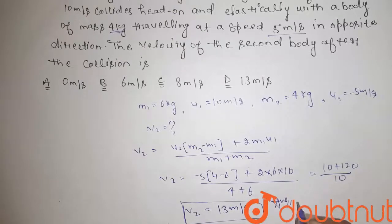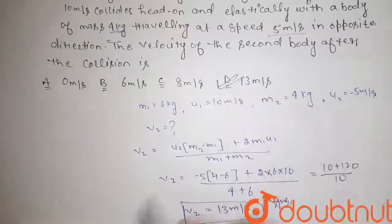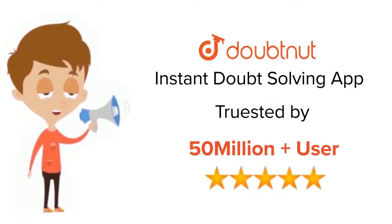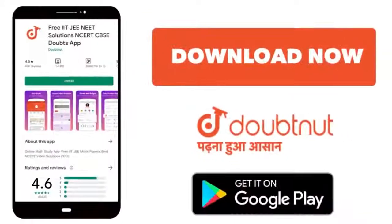Okay, so guys, the correct option is option D. Thank you. For class 6 to 12, IIT-JEE and NEET level, trusted by more than five crore students, download Doubtnut today.